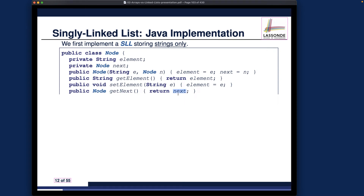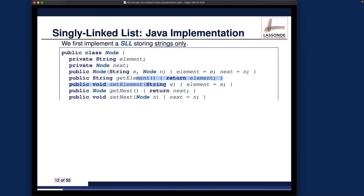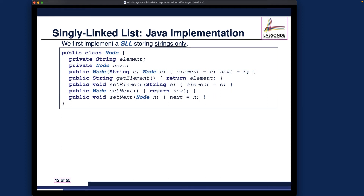We have a mutator for the element, an accessor that returns the next node reference, and a mutator for the next node. For basic linked list algorithms, we'll mostly use the next-node methods and the constructor. That covers the entirety of the Node class — simple, but it gives you a very flexible and dynamic data structure at runtime.